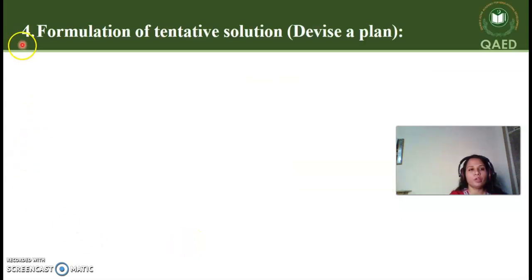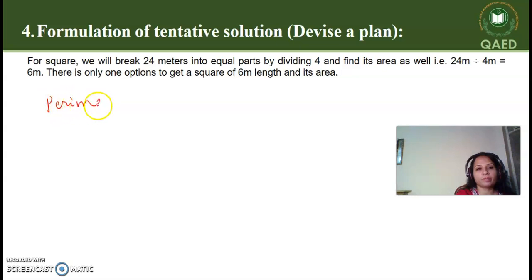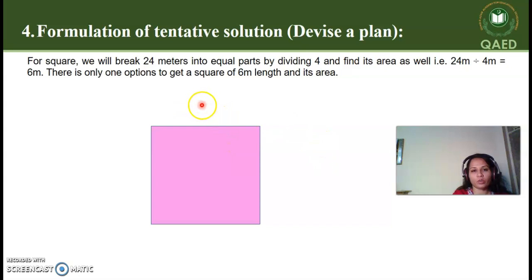Let's move on to the part number 4. Point number 4 is formulation of tentative solution, that is, devising a plan. Now, we should know what is the plan that we should implement to find the solution to the problem. Now, if perimeter is equal to 24 meters, it means that the length of the wire is 24 meters. Now, for the square, we will break 24 meters into equal parts by dividing by 4 and to find its area as well. This is only one option to get a square of 6 meter length and its area. So, the only option to get a square is that the length and breadth, or in other words, the side of the square is 6 meters.